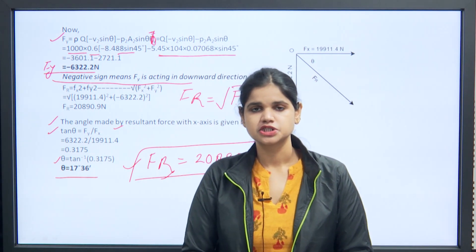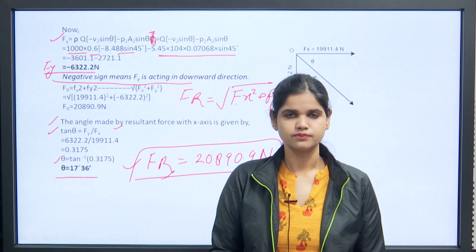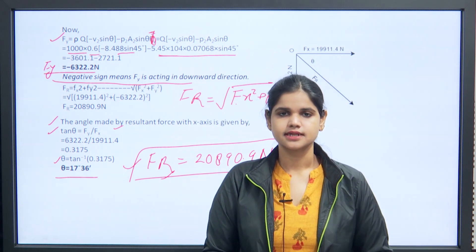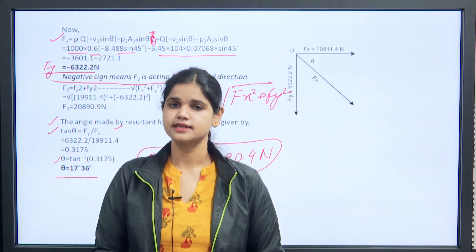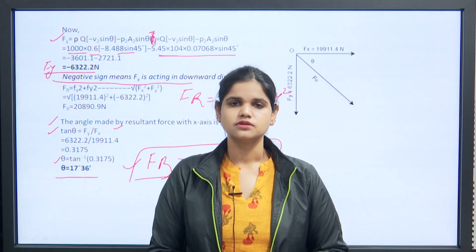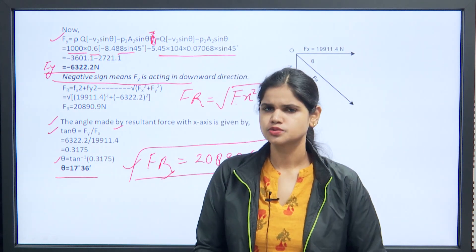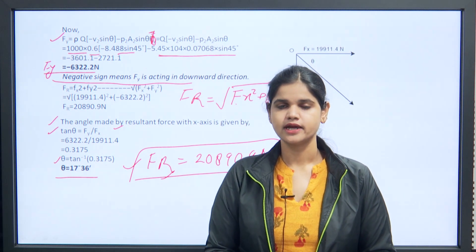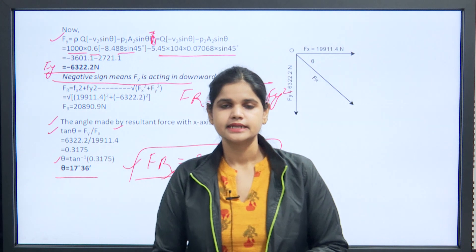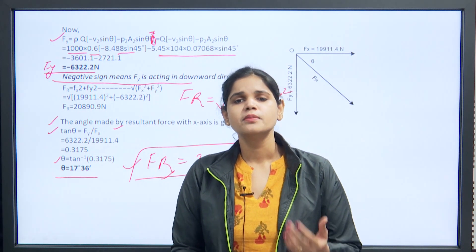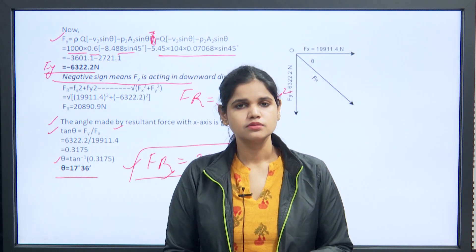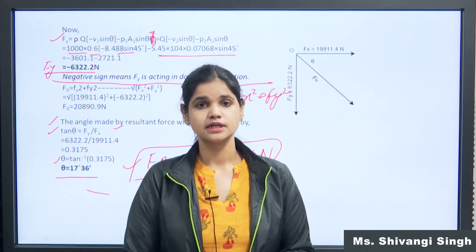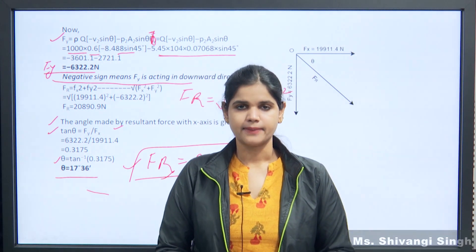This is one numerical on the momentum equation. Different numericals can be asked — the bend angle theta can vary: 45°, 60°, 30°. Just put the given values directly into the formula. We have now covered the momentum equation and its application on bent pipes. The moment of momentum equation may also be asked in exams. Next, we will deal with major and minor losses in pipes. Thank you so much.